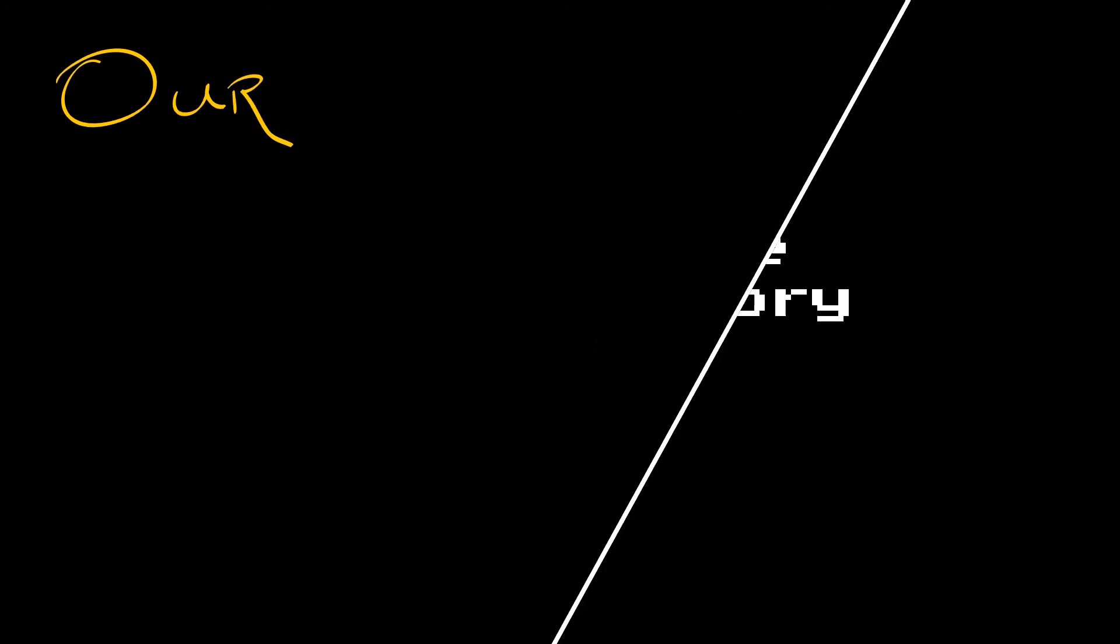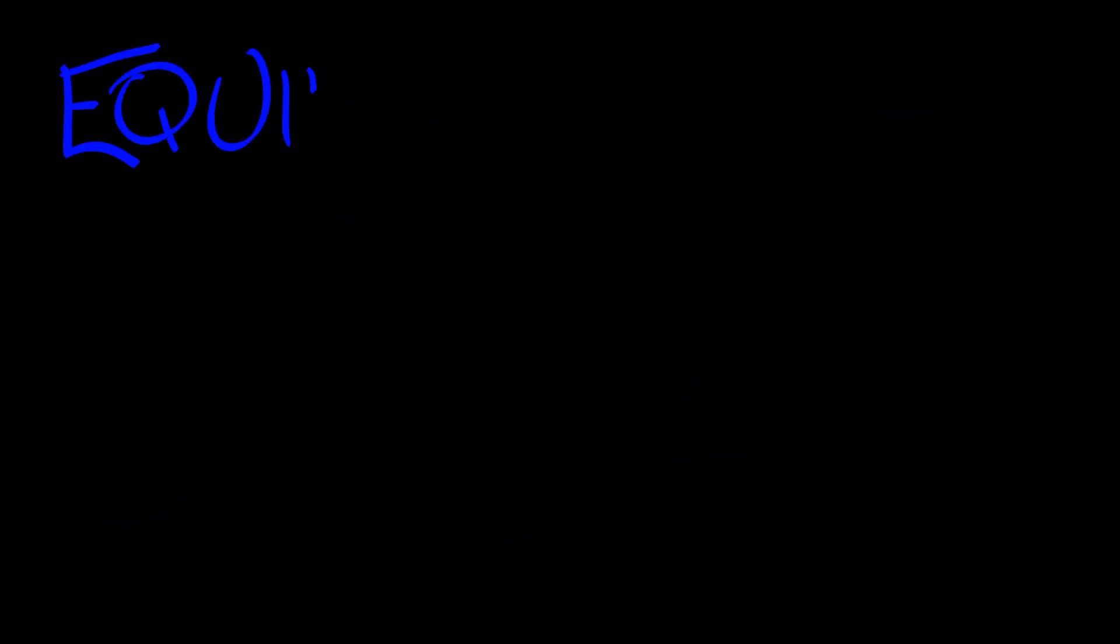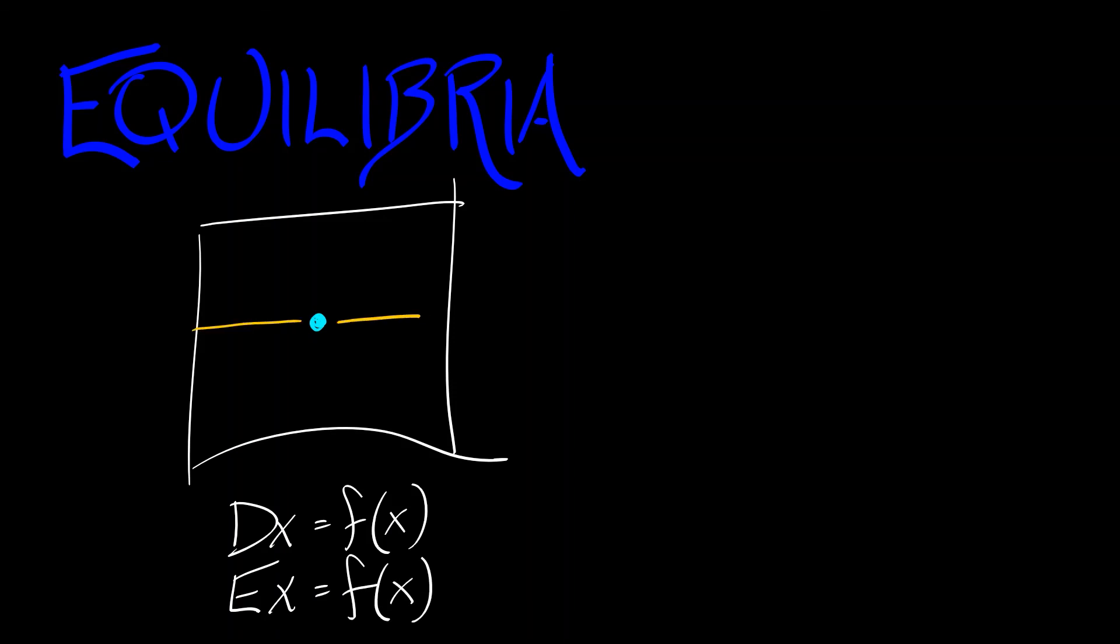What did we do there? We said, look, dynamical systems in general are nonlinear and too hard to solve. So what we're going to do is focus on the equilibria, look at those individual stationary solutions, and then classify them by means of linearizing the dynamical system using Taylor expansion.